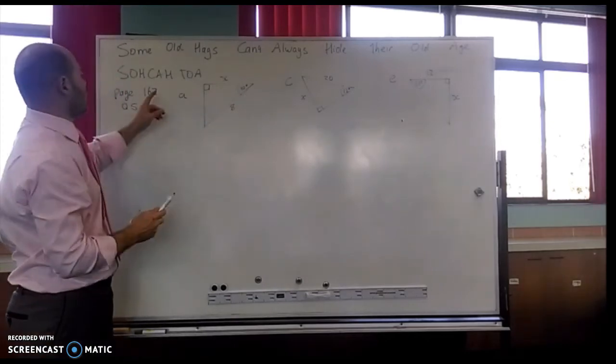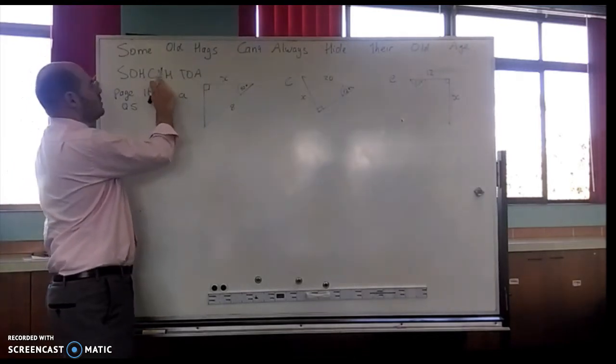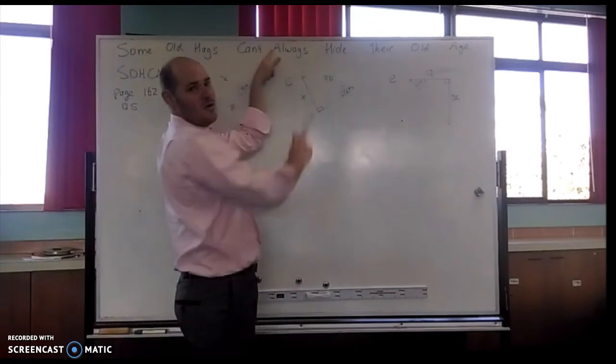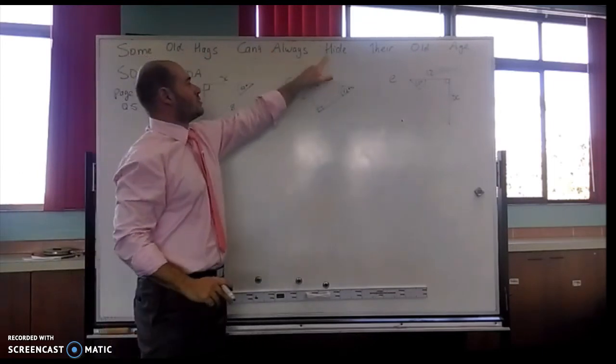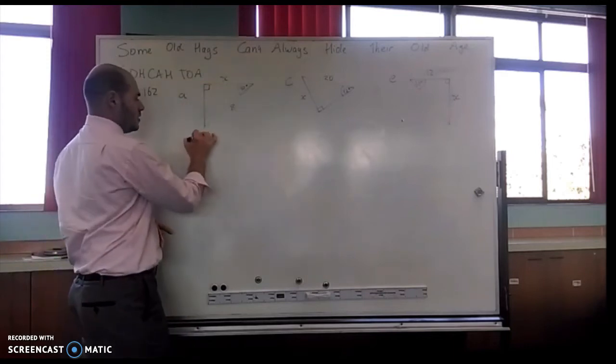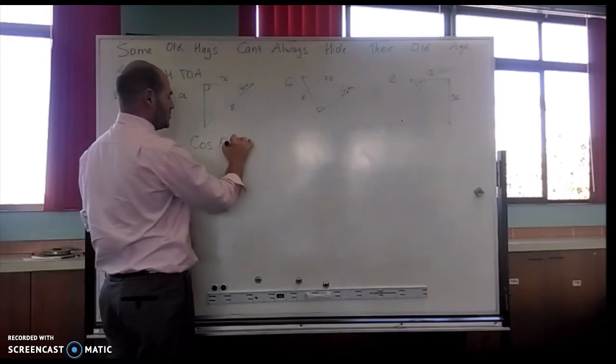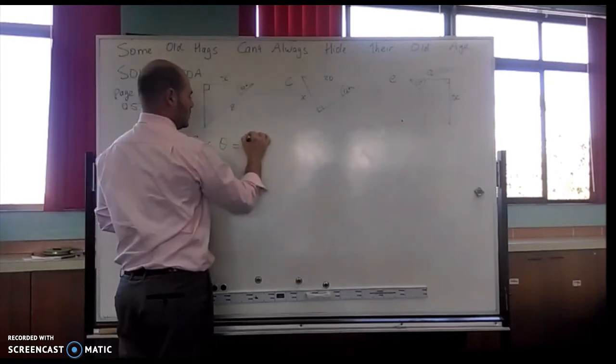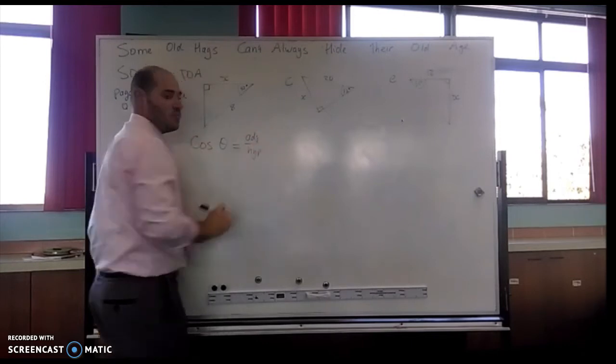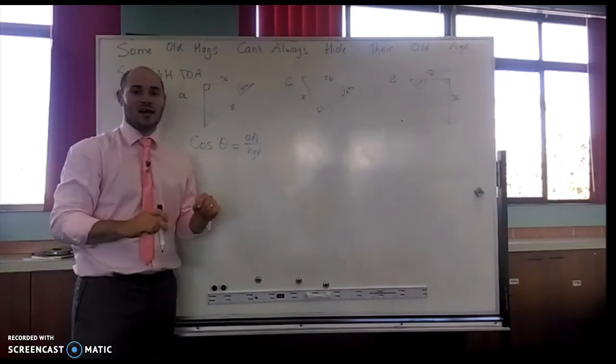I have to have a look at which one has adjacent and hypotenuse. I go SOHCAHTOA here, so cosine has adjacent and hypotenuse. Can't always hide has adjacent and hypotenuse. So I'm going to be using my cosine ratio this time. So I start with my rule, cos theta equals adjacent over hypotenuse.